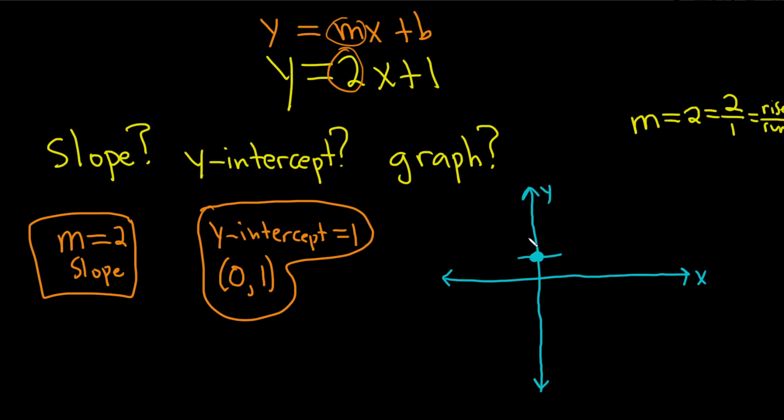So we're going to rise 2 and run 1. So 1, 2, and then run. So rise 2, run 1. From the y-intercept, we rise once, twice, and then we go right 1. So up 2, right 1. Because they're both positive, you rise up and you run to the right. Connect the dots and then just make a line and extend it, and that's it.